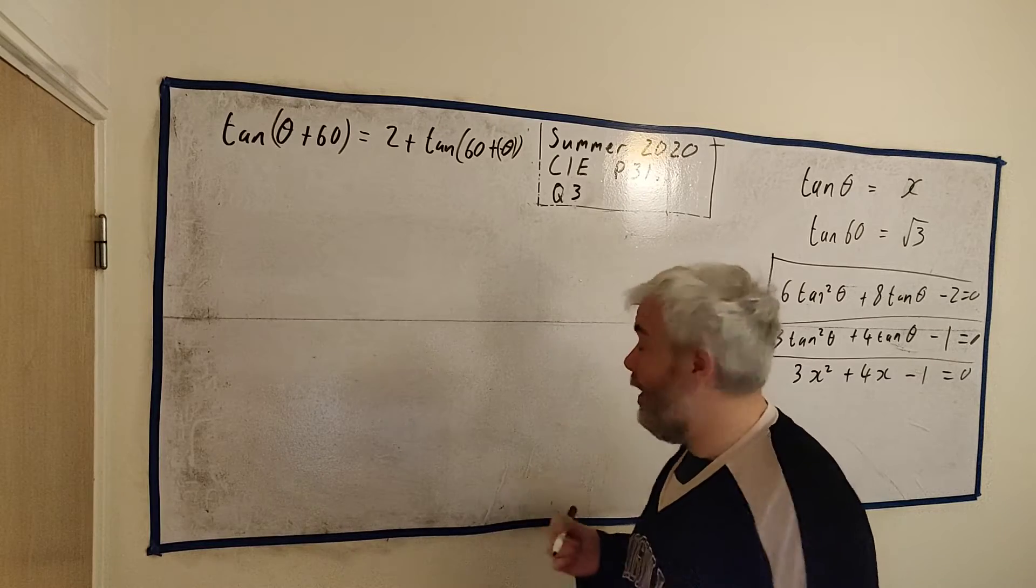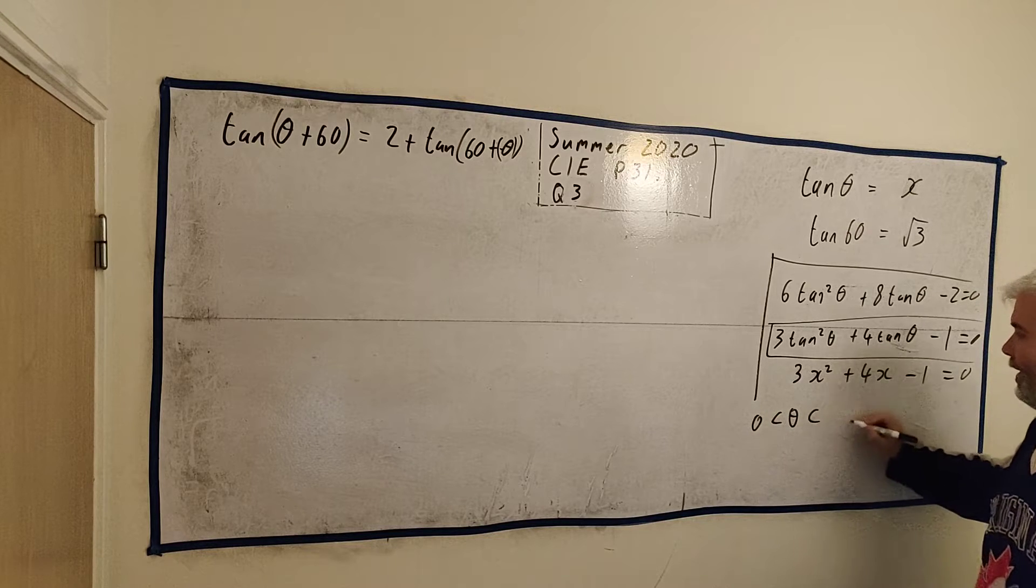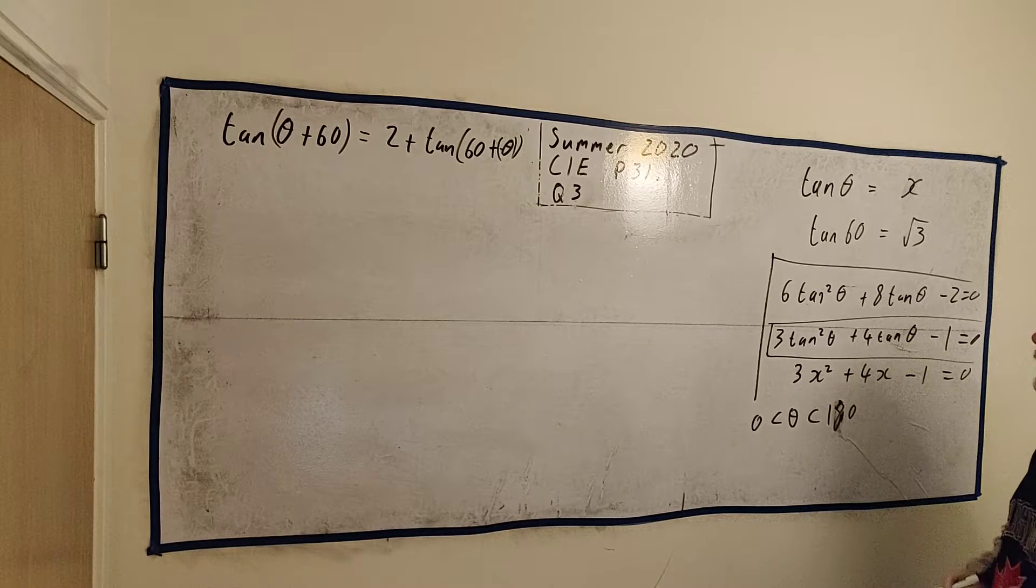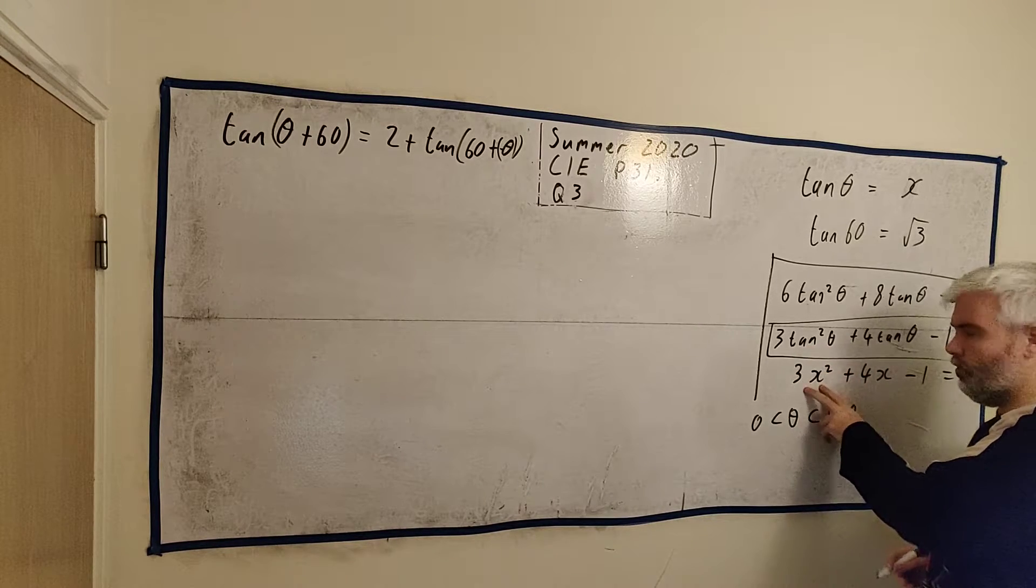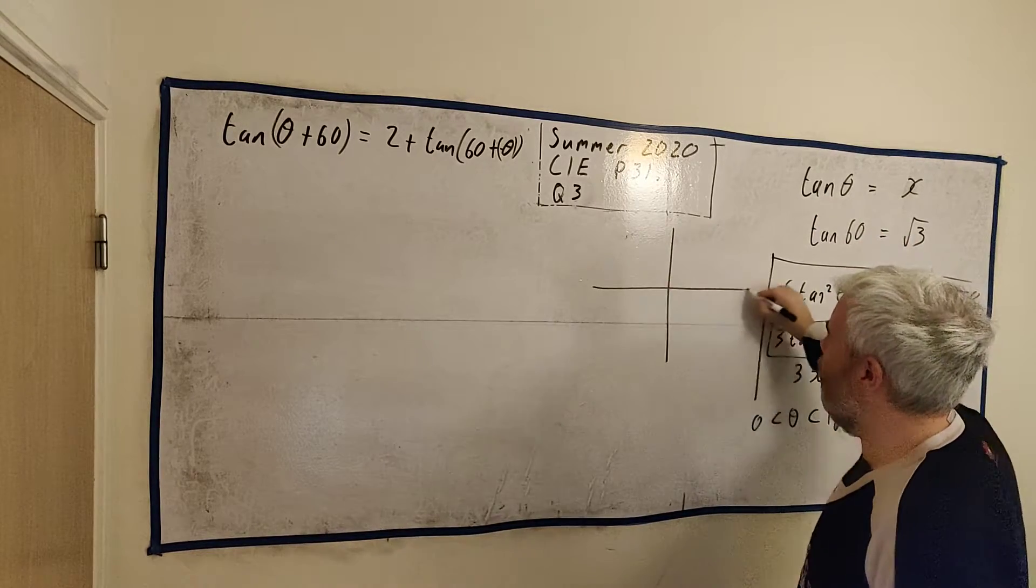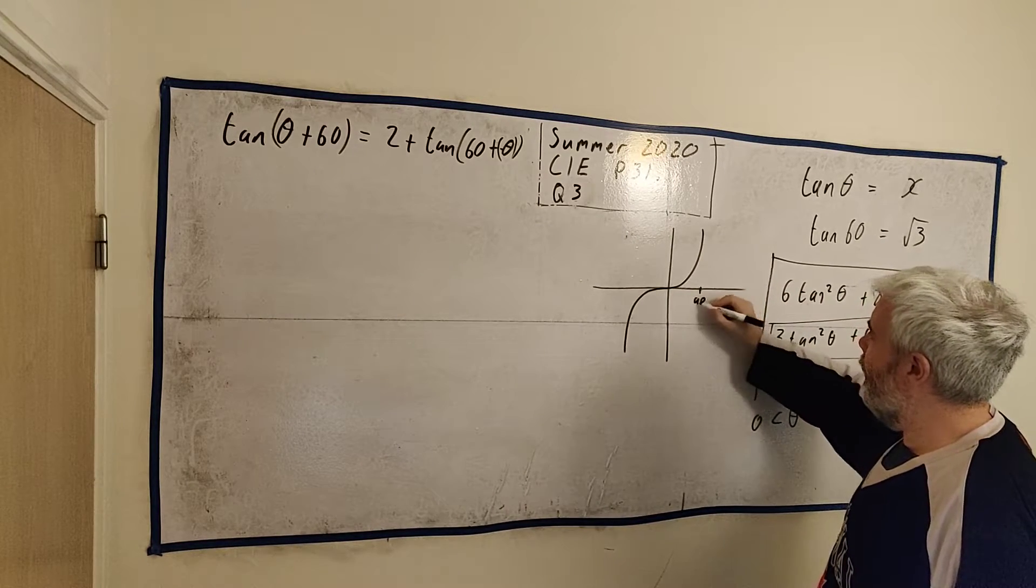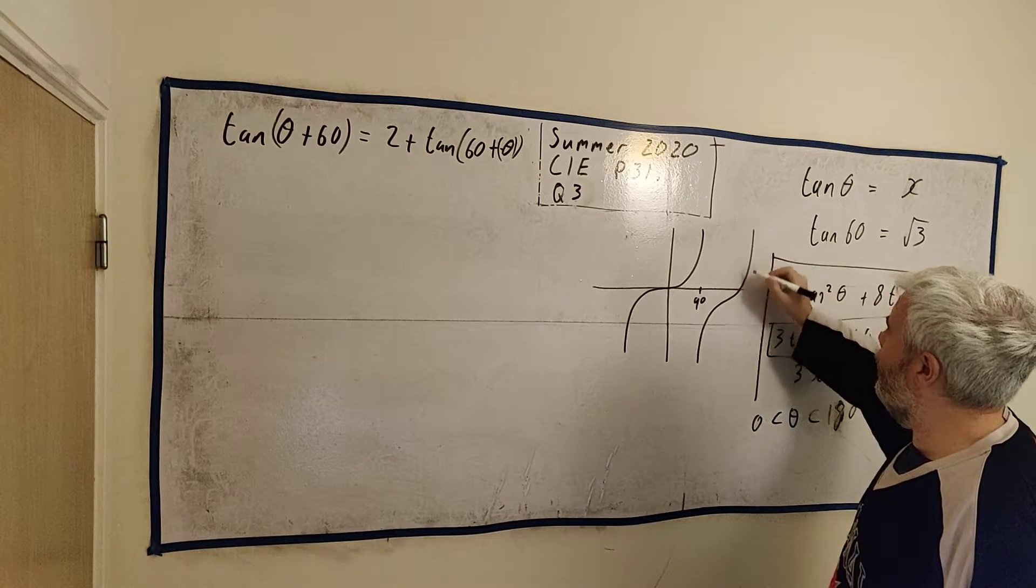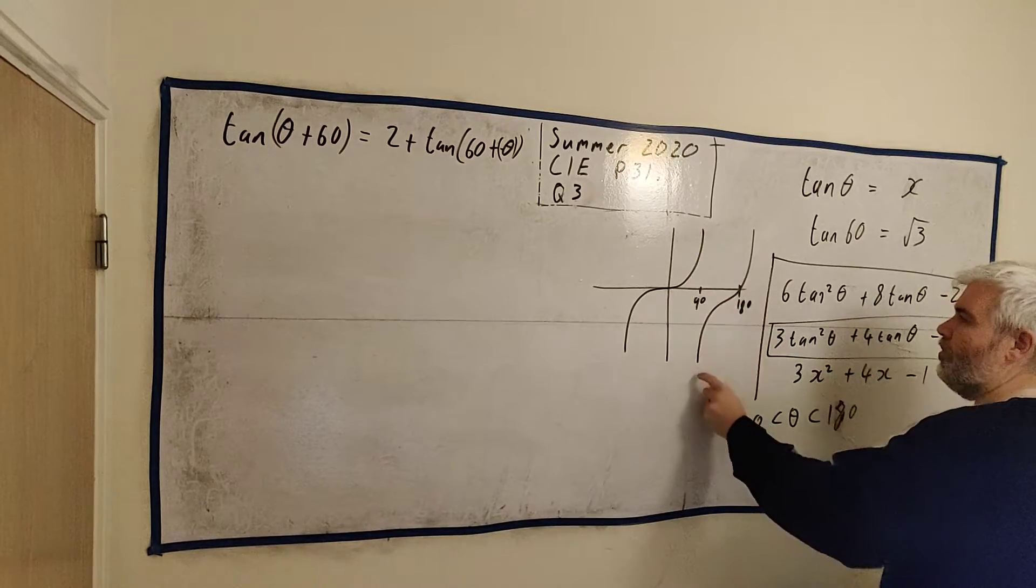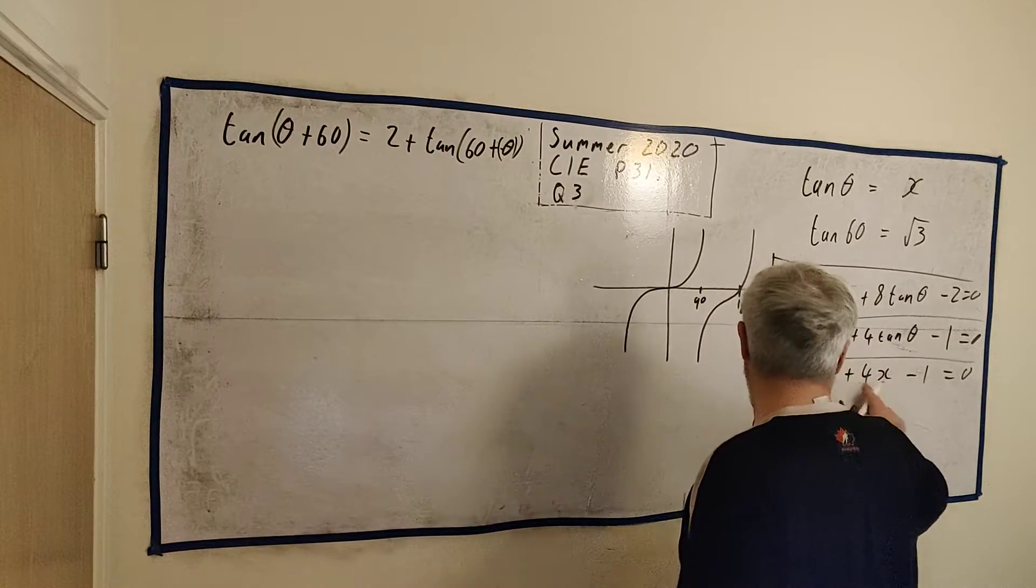The rest of the question says, hence solve this for θ bigger than 0 and less than 180. So we're going to be solving for tan θ. We'll do the quadratic here. But we're going to be solving for tan θ. So it's probably a good idea to have a little idea of what tan θ looks like. Looks like that up to 90. And then it looks like this up to 180. So between 0 and 180 is there. That's good because nothing is double. We should get unique answers for anything we get in here.